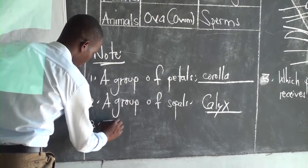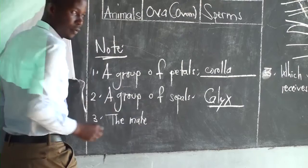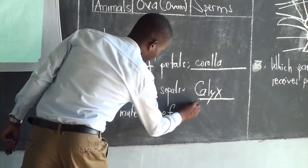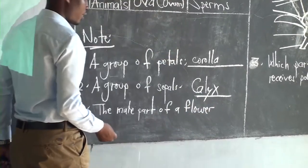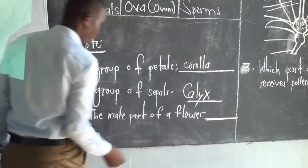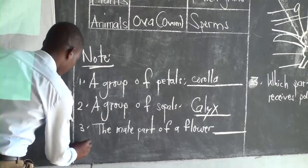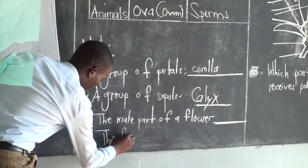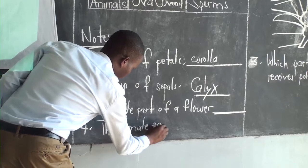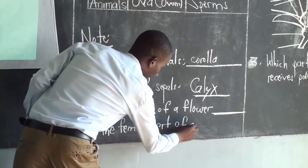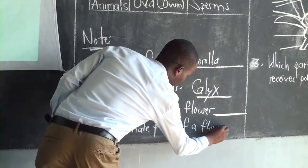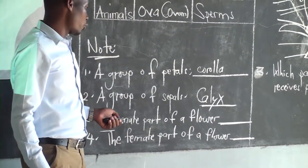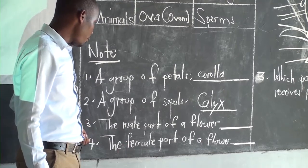We can look at the male parts of the flower — what name is given to the male part of the flower? And lastly, you can see the female parts. You can answer: what name is given to the female part of the flower?